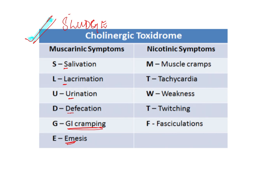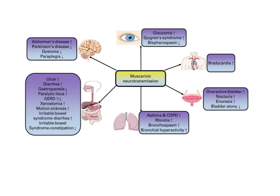For nicotinic symptoms, the easiest mnemonic is MTWTF — Monday, Tuesday, Wednesday, Thursday, Friday — which stands for: M — Muscle cramps, T — Tachycardia, W — Weakness, T — Twitching, and F — Fasciculations. This is the easiest way to remember the nicotinic symptoms.